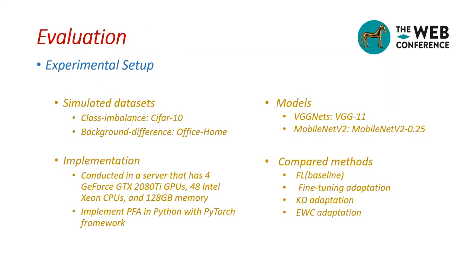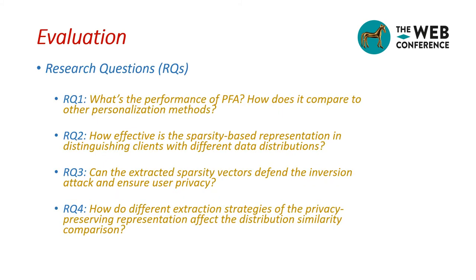Next, we introduce our experimental evaluation. We use two public datasets, CIFAR and Office Home, to simulate two real-world scenarios: class imbalance and background differences. Class imbalance means the statistical distribution of data in each client may be extremely different, while background differences simulates the situation where the object is identical but the background differs. We evaluate on two widely used model architectures, VGGNet and MobileNetV2, implemented with PyTorch. We compare the FL baseline and three other personalization methods against our PFA. Our evaluation is driven by four research questions.